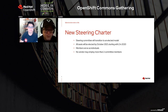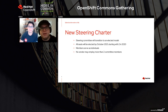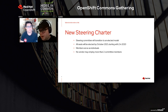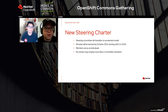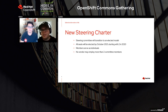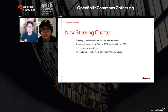For context, before we adopted this new charter, the steering committee had been in a bootstrap phase since early 2019. The model was that there were appointed representatives from companies most active when the committee was formed — Google, IBM, Red Hat, and VMware. Google had a majority of seats, and members served as representatives of their employer rather than as individuals. Additionally, there were no rules or guidance for how new members would be added or how the committee would be maintained over time.